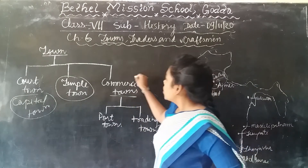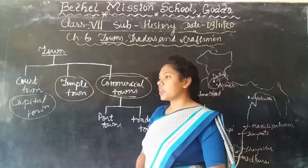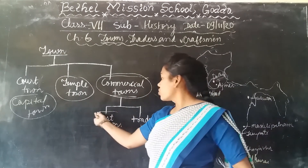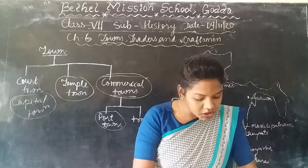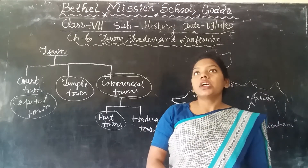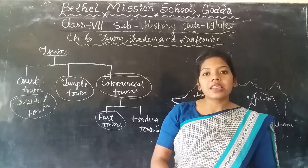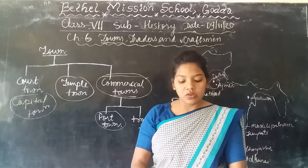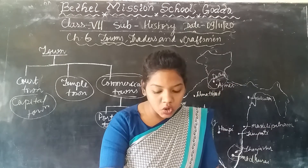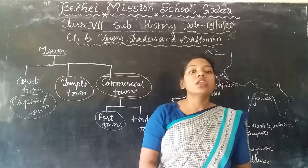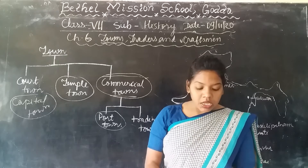Now we are going to talk about the commercial town. The commercial town developed in two ways — one on land and the other as a port town. In a commercial town, goods are being sold and bought, and exchange of things happened according to fixed prices. India is surrounded by the sea, and due to that, various cities were developed near the sea.